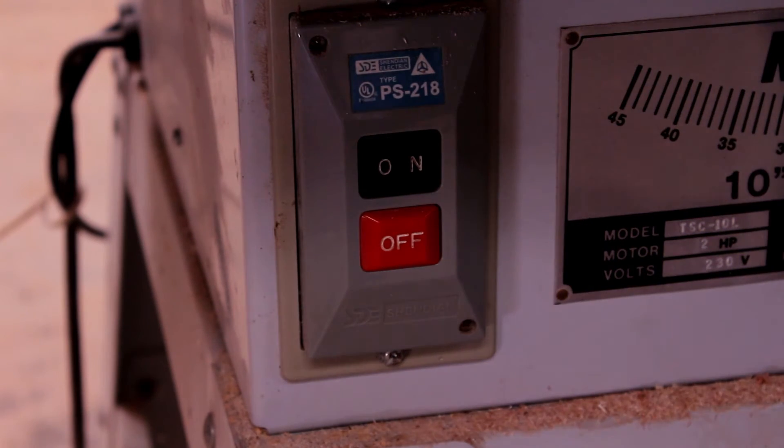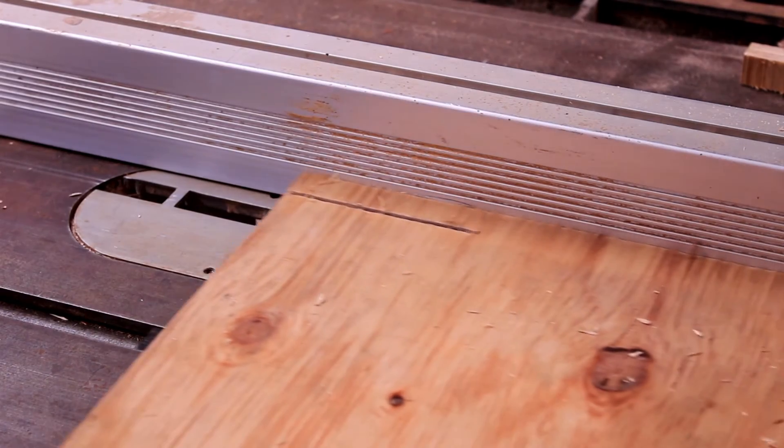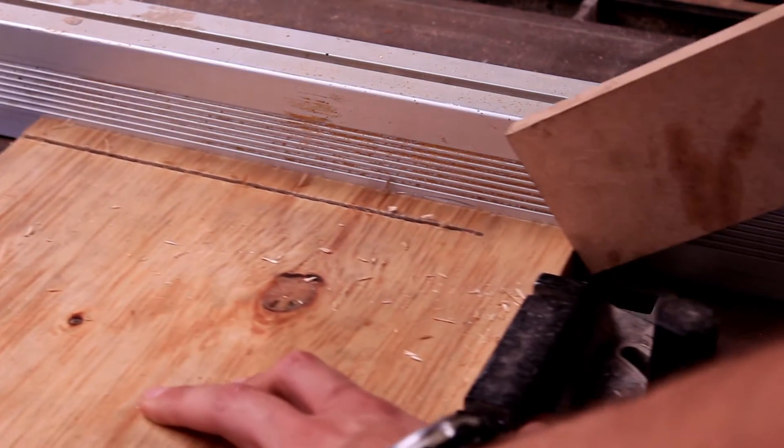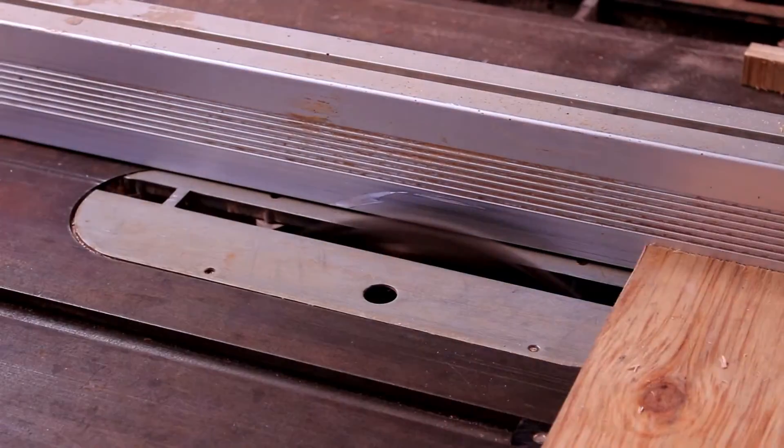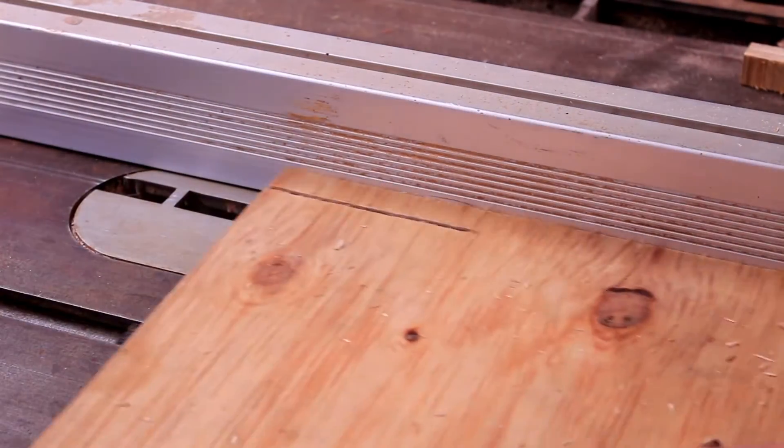After the glue is dried, it's time to make the blocks for the days of the week and also the months. On the table saw, I'm just ripping a bunch of strips 19mm wide. I'm doing it 19mm wide because my board is 19mm thick and that will make a perfect square.